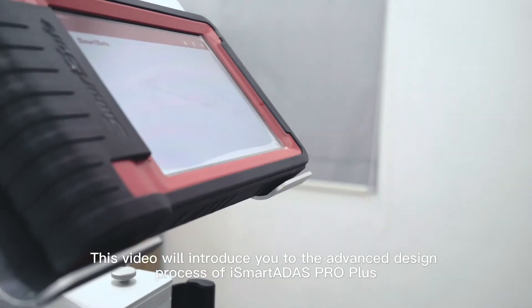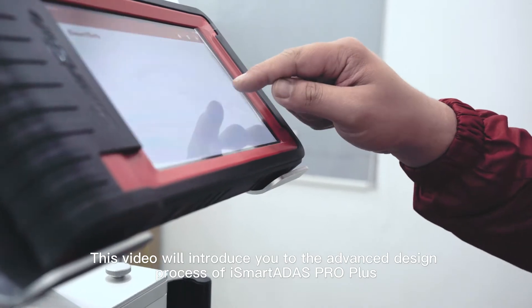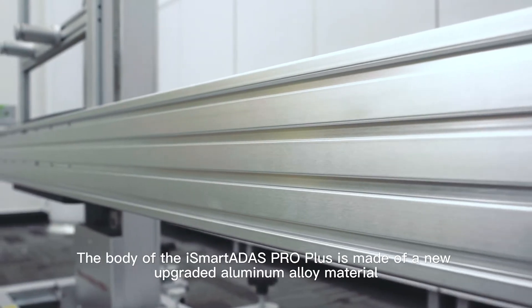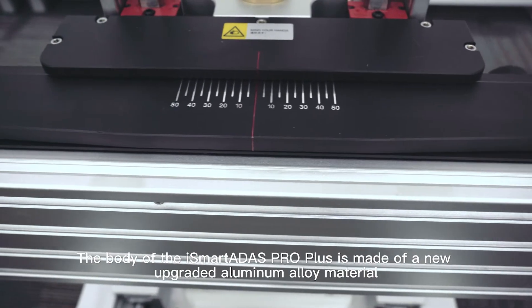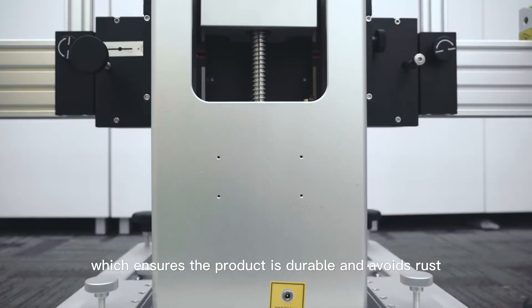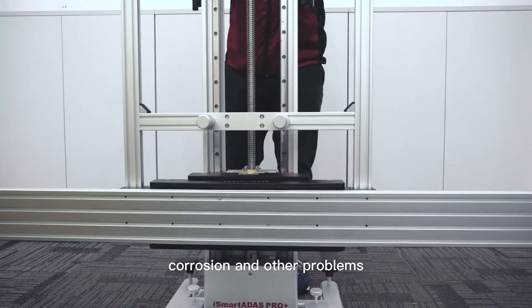This video will introduce you to the advanced design process of iSmartADAS PRO Plus. The iSmartADAS PRO Plus body is made of a new upgraded aluminum alloy material, which ensures that the product is durable and avoids rust, corrosion, and other problems.